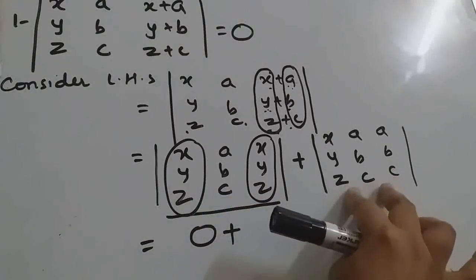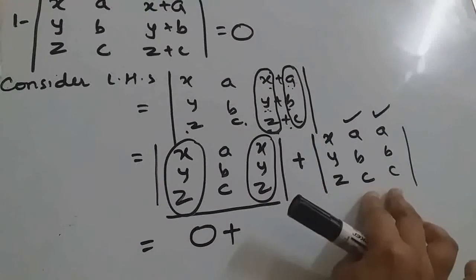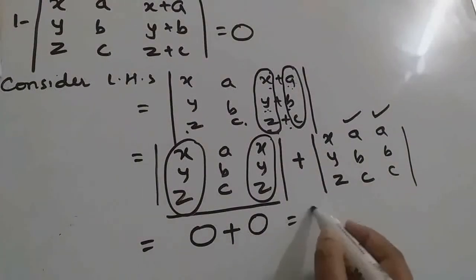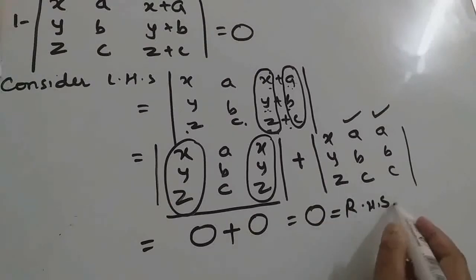Similarly here also a, b, c, a, b, c. These two columns are identical. So this determinant value also will be 0. So 0 plus 0 is what? 0, which is right hand side.